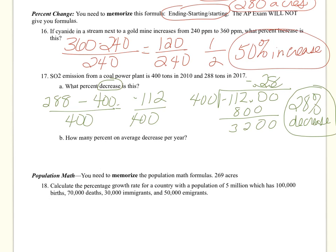Now, how many average per year? We need to take 2017 minus 2010, and we get seven years. So we just need to take 28% divided by seven, and that gives us a 4% decline per year.